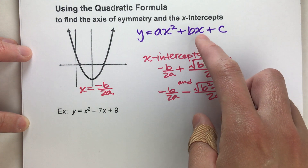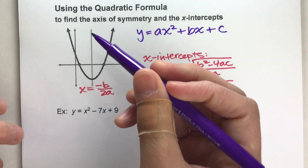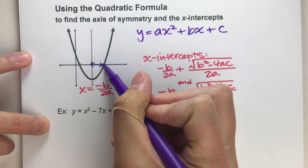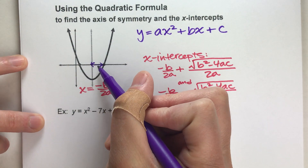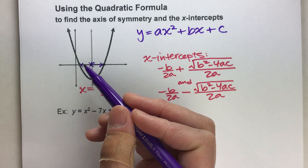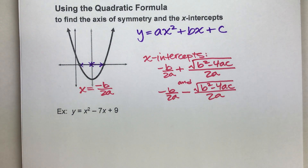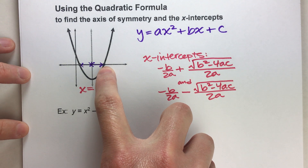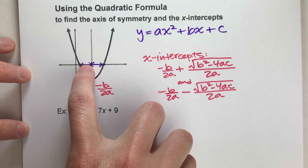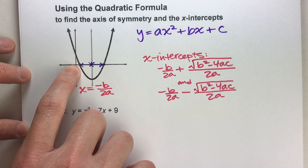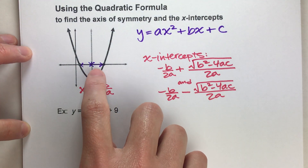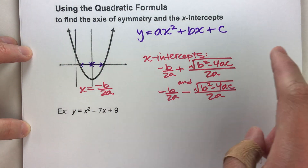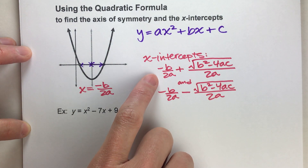How does that help us find the x-intercepts? We know that the parabola is symmetrical, so if we can figure out the distance from the axis of symmetry to one x-intercept, we can use that same distance on the other side to find the other x-intercept. Basically, we just need the axis of symmetry plus a little bit to find the first x-intercept, and the axis of symmetry minus that little bit to find the other one. The question is: what is that little bit? It turns out there's a formula for that.